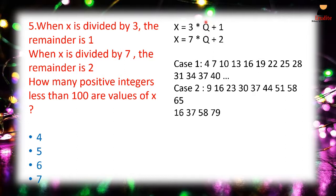Substituting values of q₁ starting from 1 gives the series: 4, 7, 10, 13, 16, ... increasing by 3 each time. Substituting values of q₂ starting from 1 gives: 9, 16, 23, 30, ... increasing by 7 each time. The common values in both series are 16, 37, 58, 79. The difference between consecutive common values is 21, so the next would be 100.